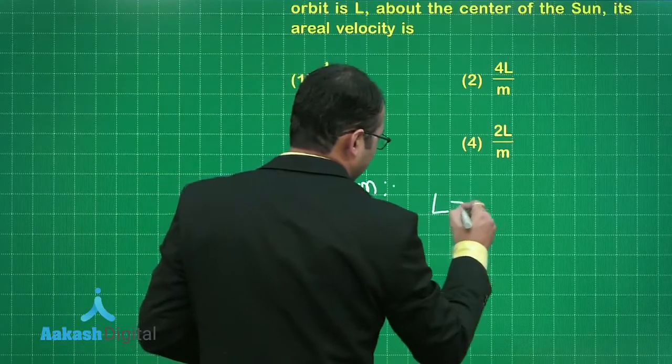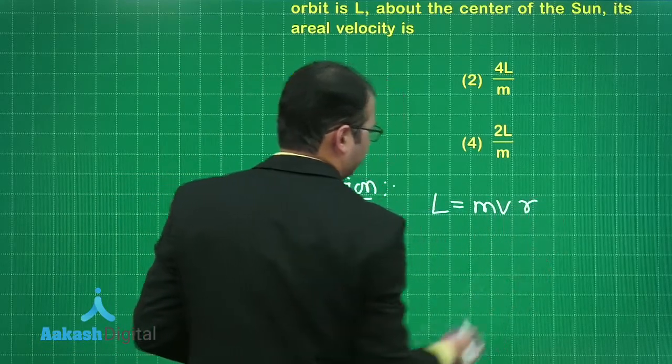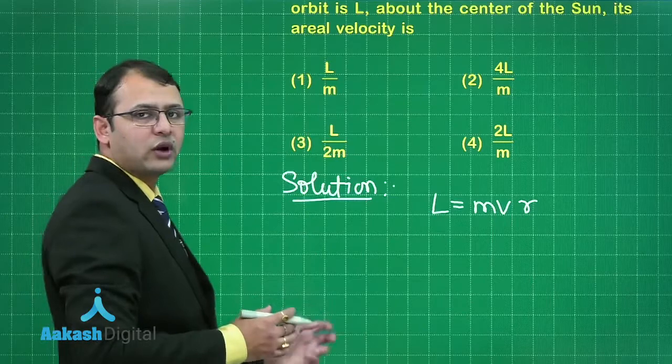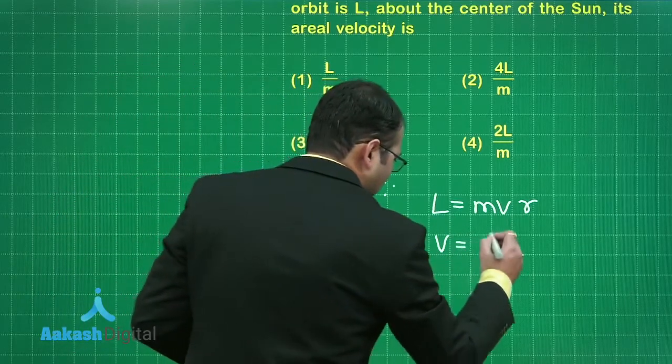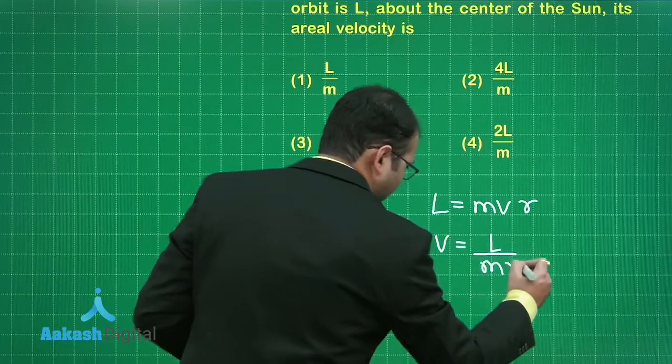First of all the angular momentum is given as MVR as we all are aware for any circular motion the angular momentum would be equal to MVR. From here I can say V is equals to L by MR.